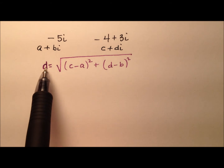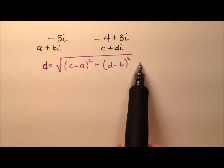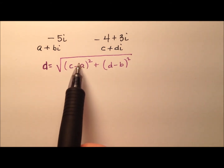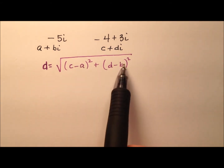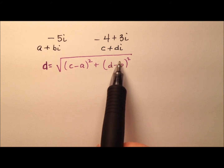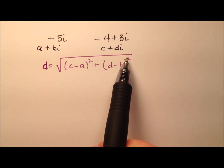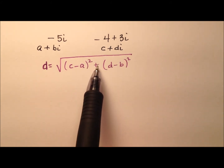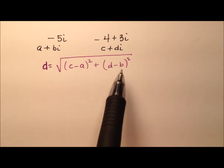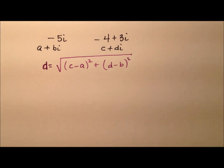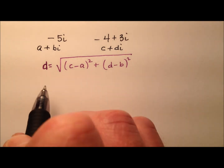Our distance formula tells us that if we take the difference of the real parts and the difference of the imaginary parts, and square each one and add them under a square root, that's our distance. Essentially, it's just the Pythagorean theorem in the complex plane.